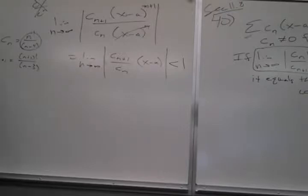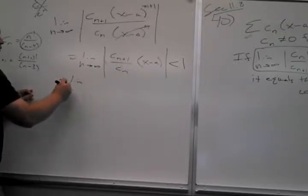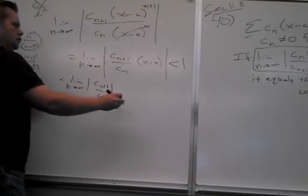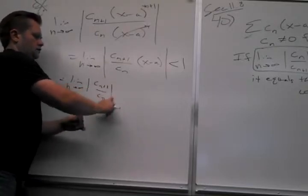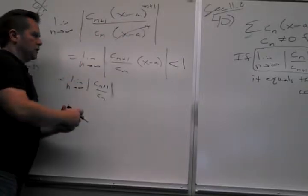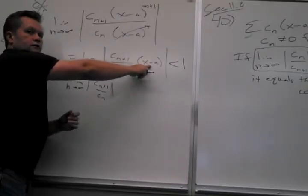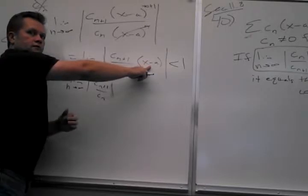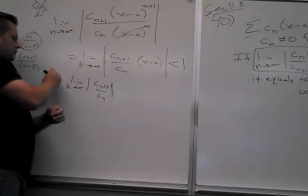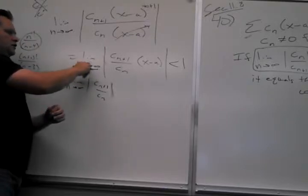So what could you do from here? So I have here the limit as n goes to infinity of c_{n+1} over c_n, times x minus a. What's the limit as n goes to infinity of this? Yeah, it just comes out, right? It's like a constant according to this limit.